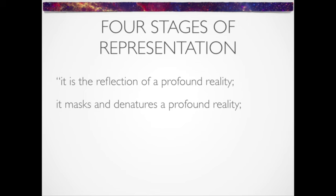Baudrillard's philosophy intervenes at this point. In Simulacra and Simulation, Baudrillard argues that there are, in fact, four stages of representation. The first two points are the same as Plato's. In the third stage, however, a simulacrum moves beyond perverting reality to incorporating a pretense of reality. The simulacrum pretends to be a faithful copy, even though there is no original to which it corresponds.